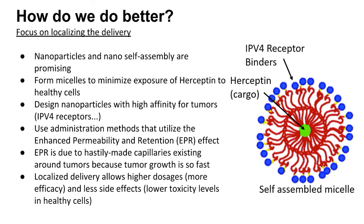To go into a bit more detail on the nanotechnology involved, one mechanism is the enhanced permeability and retention effect — the EPR effect. EPR is a consequence of the rapid growth of tumor cells and their large appetite for nutrients. The capillaries surrounding tumor sites are often much more permeable than in healthy tissues because of how quickly these tumors are growing. If we are able to utilize the EPR effect as much as possible, we can improve many cancer treatments, not just Herceptin.